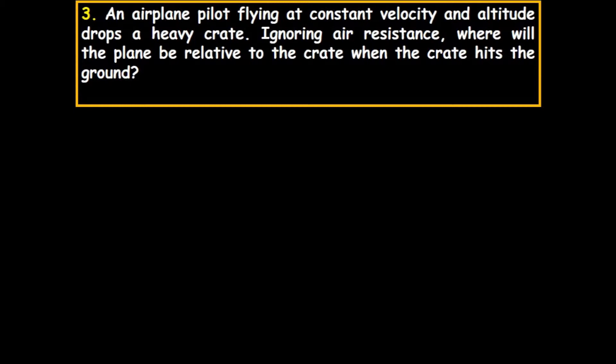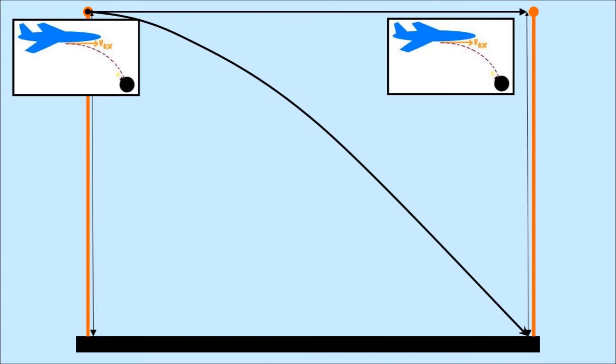Now remember, the horizontal velocity doesn't change. So if the plane is flying, the package, bomb, crate, whatever, is going to be falling at the same horizontal speed, no air friction of course, as the plane. So the plane should be right over the package when the package hits the ground.